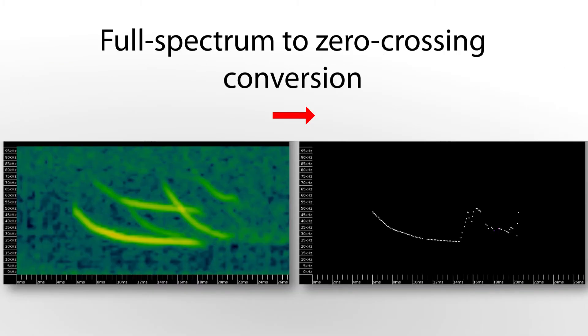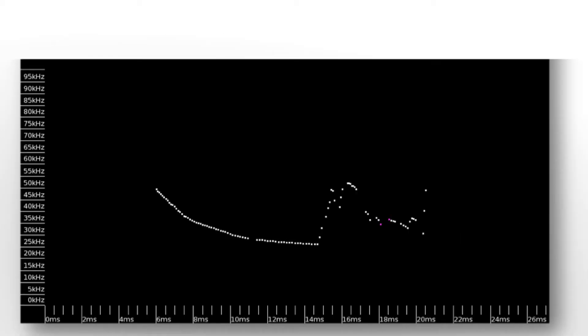The zero crossing view we just saw was a conversion done by Kaleidoscope from full spectrum to zero crossing. If Kaleidoscope works the same way as a native zero crossing recorder, this is the kind of mess that can happen.